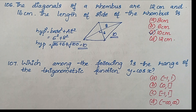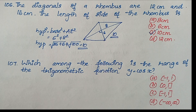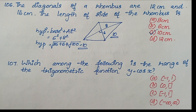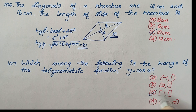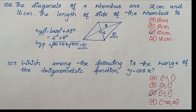Question 107: What is the range of the trigonometric function y = cos x? The range of cosine is the closed interval [−1, 1]. Option C is the correct answer.